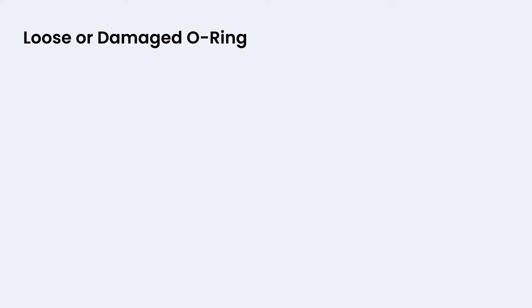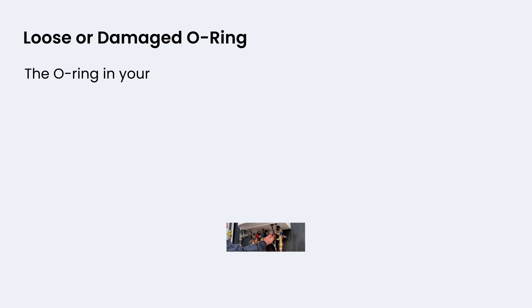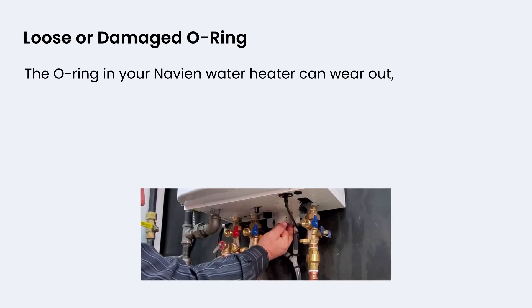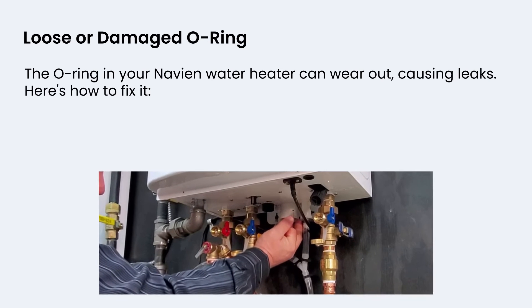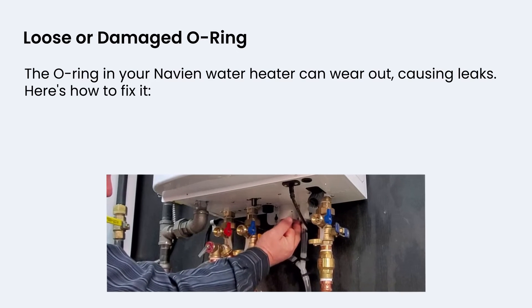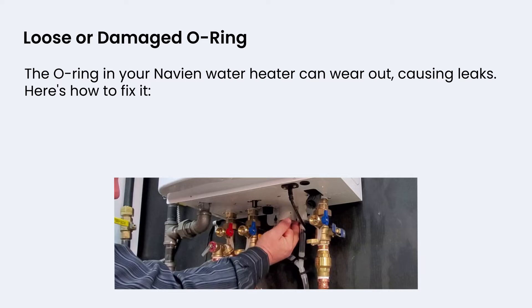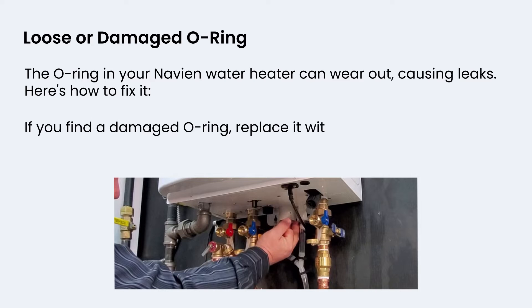Loose or damaged O-ring: the O-ring in your Navion water heater can wear out, causing leaks. Here's how to fix it: if you find a damaged O-ring, replace it with the correct size and apply lubricant.